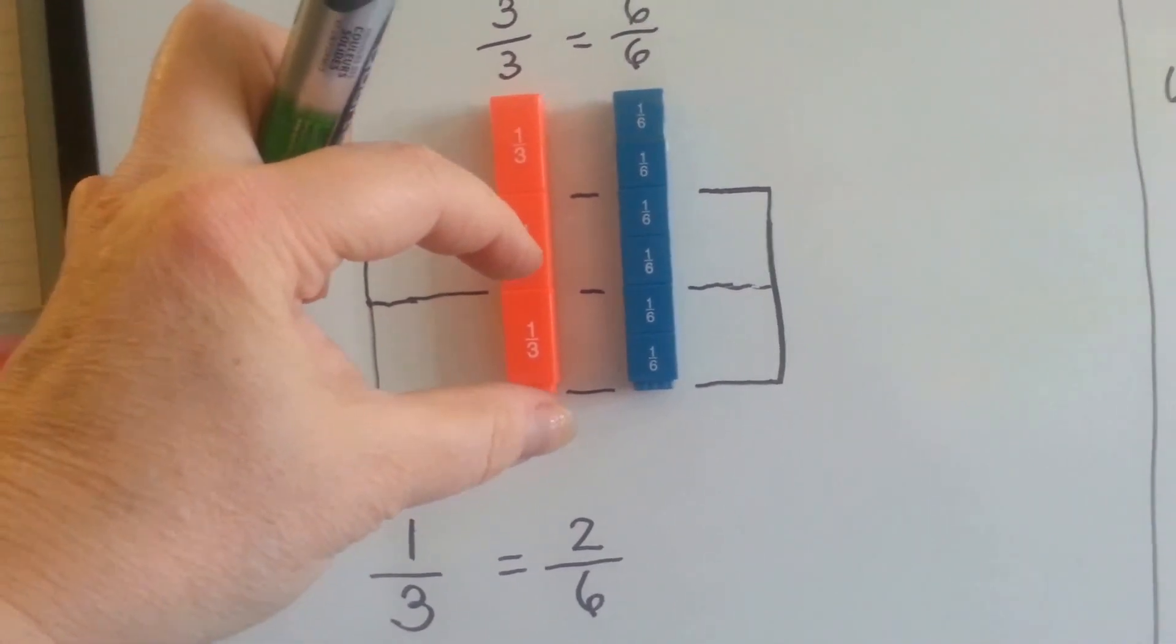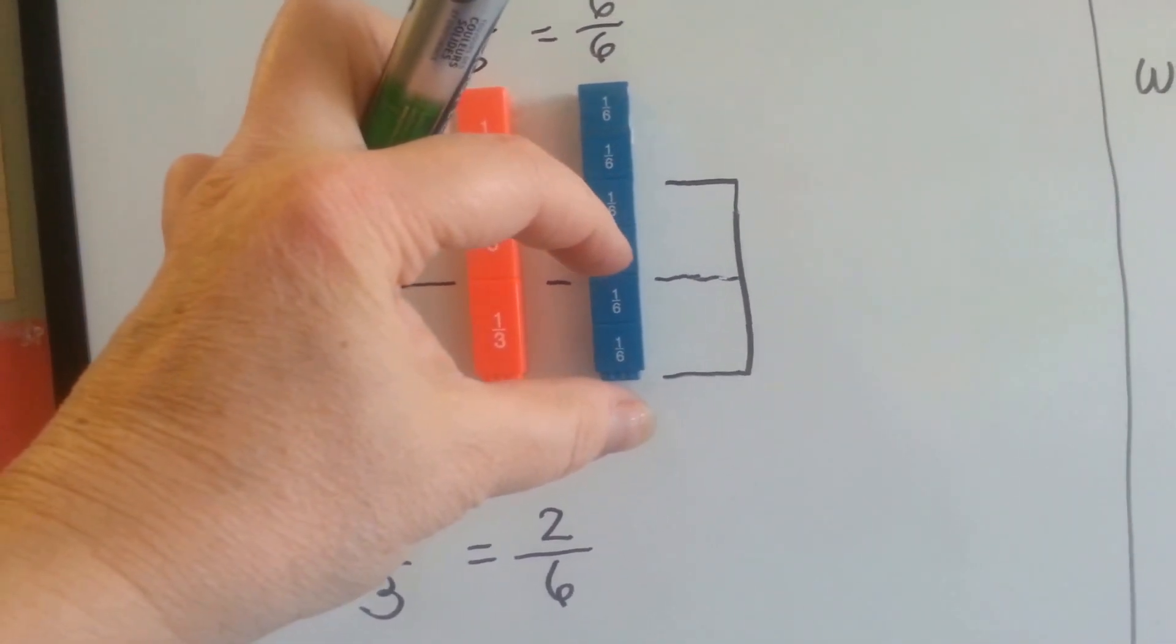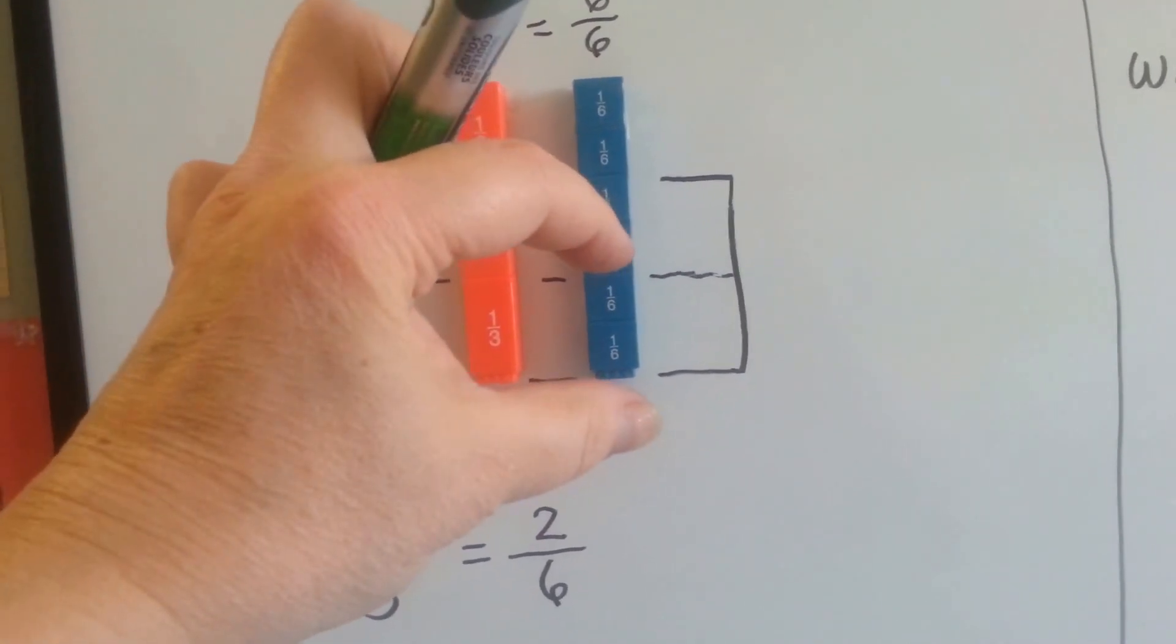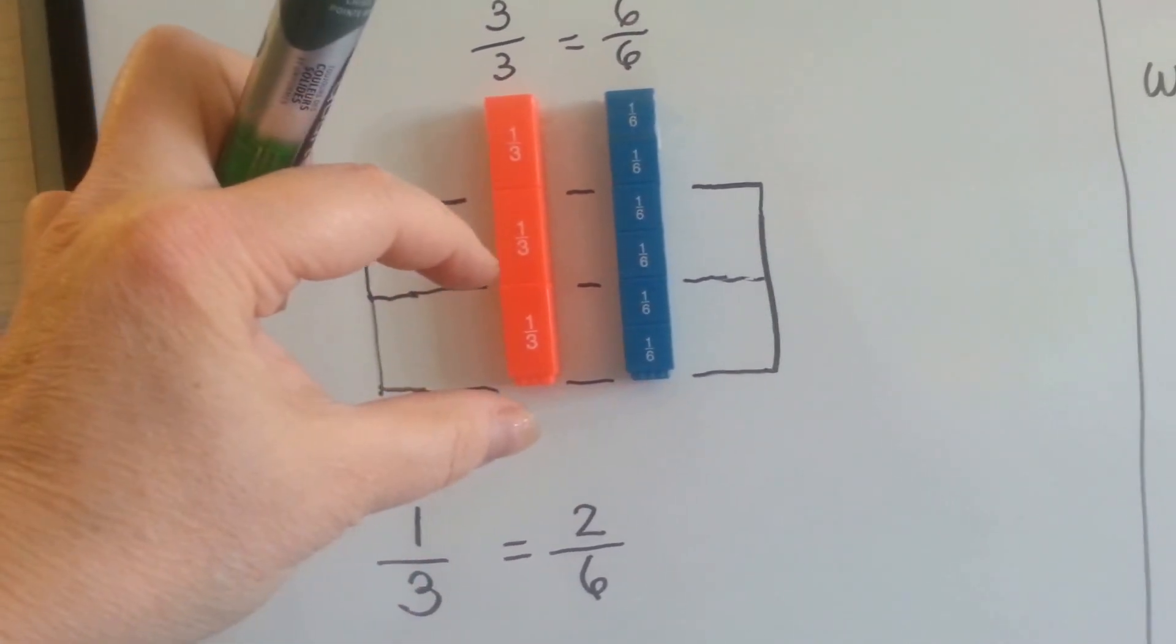But if you look, 1 of the 1 thirds is the same size as 2 of the 1 sixths. 1 third is equal to 2 sixths. See that? They're equivalent fractions.